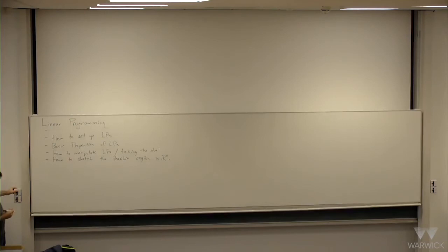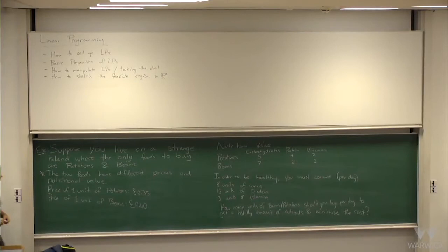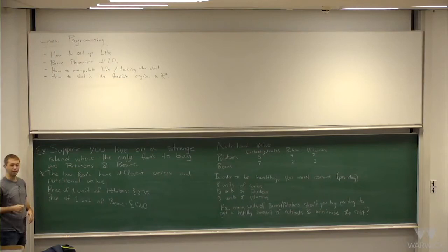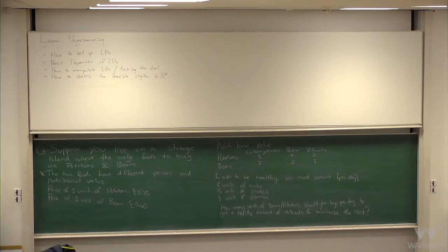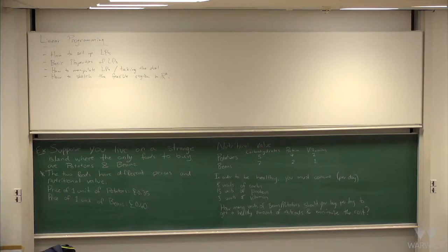The nicest way to start is with an example, just to see how linear programs turn up in a lot of real world problems. So suppose you live in a strange place where there's only two different types of food: beans or potatoes. These two different types of foods have different prices and different nutritional value. The price of one unit of potatoes is 35 pence and the price of one unit of beans is 60 pence.